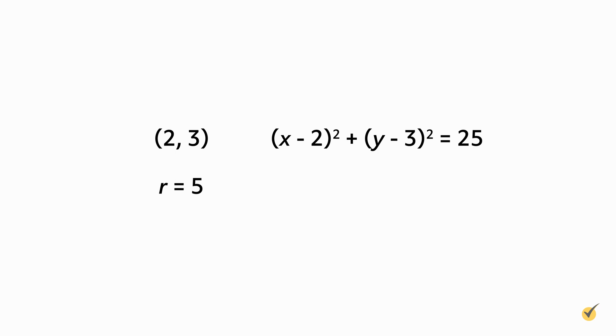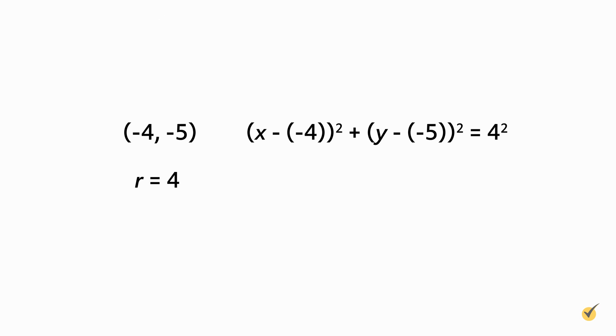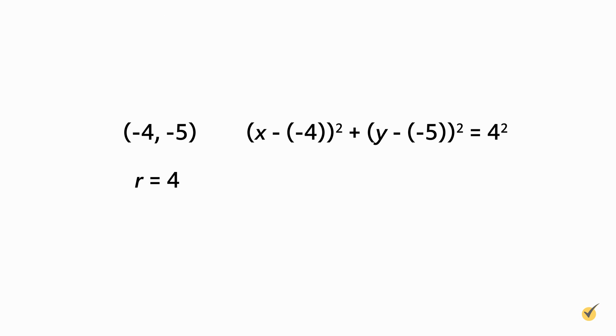Be careful when h and k are negative though. For instance, if the radius is 4 and the center of the circle is at (-4, -5), and we substitute into our equation, we have to deal with subtracting negatives. x minus negative 4 squared plus y minus negative 5 squared equals 4 squared. Those two negative signs in a row cancel and we end up with x plus 4 squared plus y plus 5 squared equals 16.